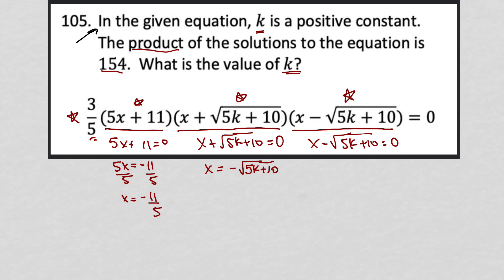And for my last binomial, if I add root 5k plus 10 to both sides, I'd have a solution of x equals positive root 5k plus 10.